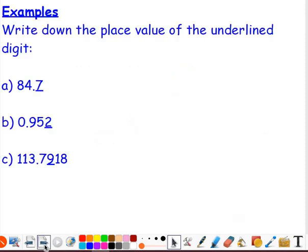So, continuing on with some examples there. Write down the place value of the underlined digit. So our first example here, 84.7. The seven is underlined, and it's the first digit after the decimal point, so we know we've got seven tenths.